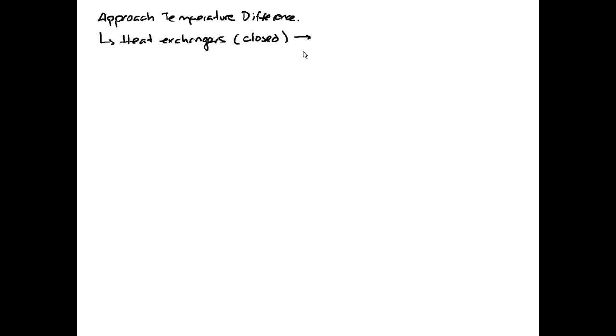Examples of these heat exchangers in this course will be the closed feed water heaters that we're going to find in Rankine cycles. But these are not the only heat exchangers. Other heat exchangers that we already studied are boilers and condensers.